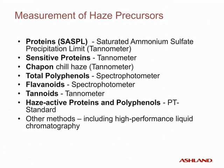On the polyphenol side, we can measure total polyphenols using a spectrophotometric method, which gives an indication of all polyphenols present in the beer sample. There are also flavonoids, which are the lower molecular weight sub-fraction of the total polyphenols. Tanninoids are measured using a synometer and indicate the high molecular weight polyphenols — these are the most reactive polyphenols and the most troublesome in terms of colloidal stability of the beer.